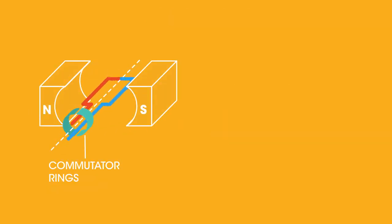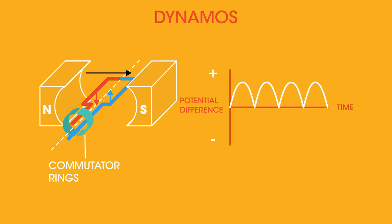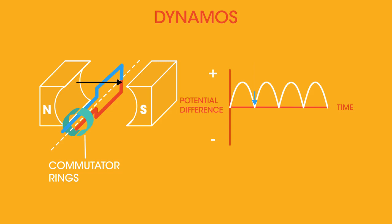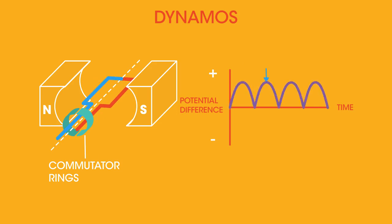Now let's look at the split ring commutator seen in dynamos. The blue side of the coil is moving up and starts off connected to this half of the commutator, and the red side moving down starts off connected to this half. The potential difference is maximum when the coil is cutting the magnetic field, and drops to zero as it rotates out. The big difference is what happens as the coils keep rotating: the side moving down stays connected to the left half of the commutator, and the side moving up stays connected to the right half. So the parts of the coil swap which commutator they connect to, but the commutators stay the same — left side moving down and right side moving up. The direction of the potential difference and current do not change in dynamos, hence the bouncy graph that always stays positive.